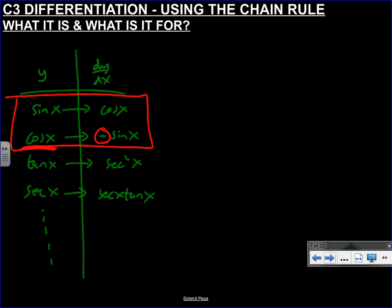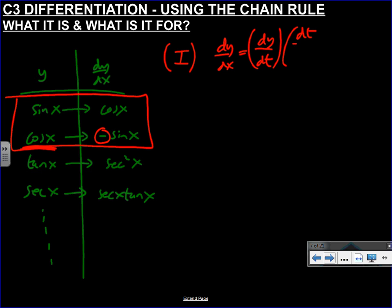Now, what is the chain rule and when do we use it? We use it when we're differentiating functions within functions. There are two definitions of the chain rule. The first one we're not really going to use until C4, but it is the principle definition. I do have another video on proving this from first principles - there weren't any videos out there that I could find, so I made one. If you want to watch it, just search 'proof of the chain rule'.